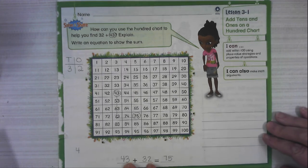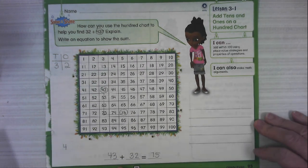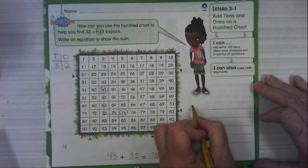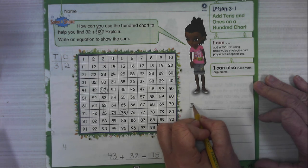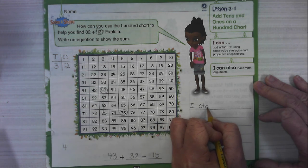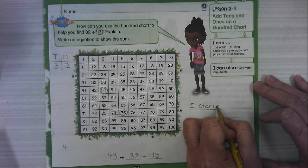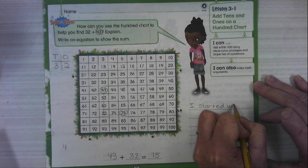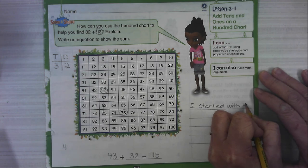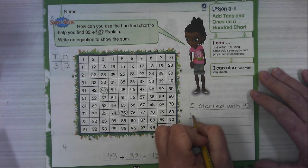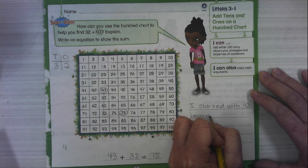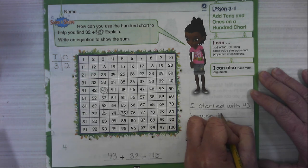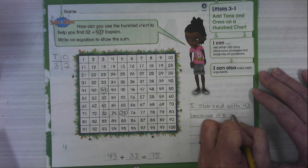Now how could we use words to explain what we did? I'm going to write, I started with 43, because it's greater.